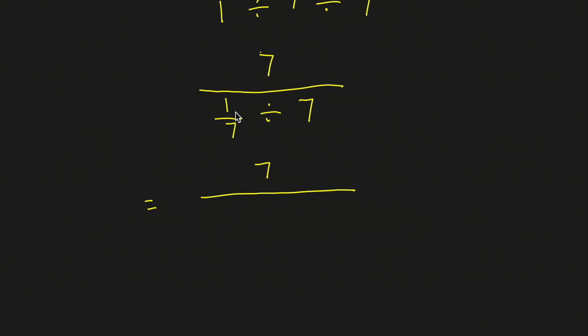And once again, 1/7th divided by 7 is 1/7th times the reciprocal of 7, which is 1/7th.